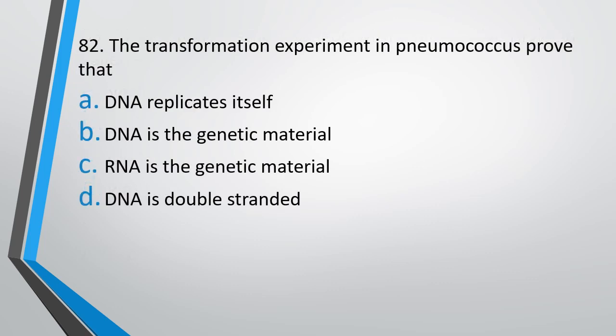Question number 82: The transformation experiment in Pneumococcus proves that: DNA replicates itself, DNA is the genetic material, RNA is the genetic material, or DNA is double-stranded? The correct answer is option B — it proves that DNA is the genetic material.